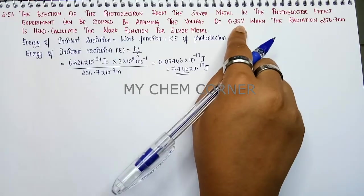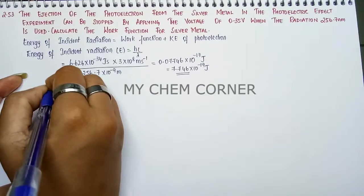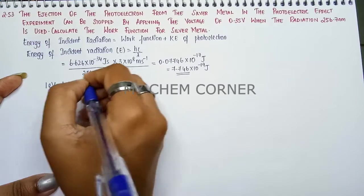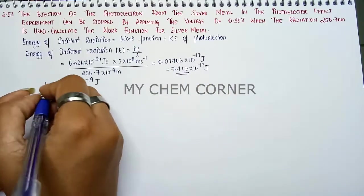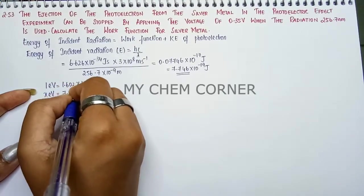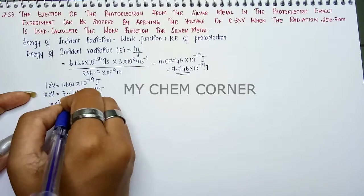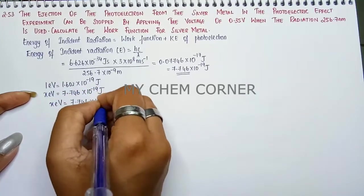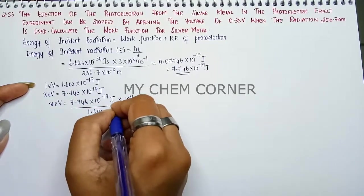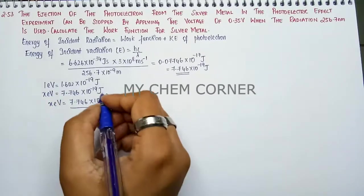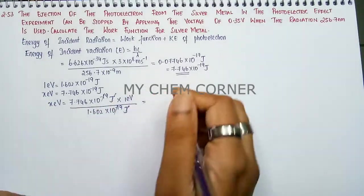The energy in joules needs to be converted to electron volts because the voltage value is given. One electron volt equals 1.602 × 10⁻¹⁹ joule. Therefore, x electron volts equals 7.746 × 10⁻¹⁹ joule × (1 eV / 1.602 × 10⁻¹⁹ joule). The 10⁻¹⁹ and joule units cancel, giving 7.746 / 1.602 = 4.83 electron volt.